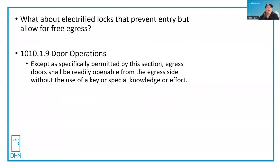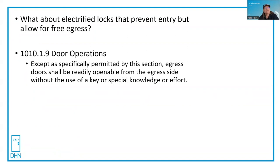But what about electrified hardware — the locks that prevent entry but allow for free egress? Access control can be confusing to AHJs, and some will say that any door that has access control for entry must also meet UL 294. That's not true, unless you're locking the egress side, and that's covered by those special locking arrangements.